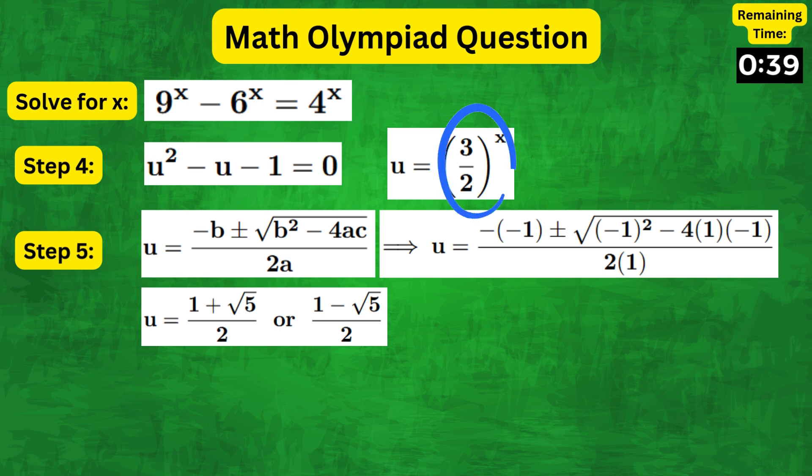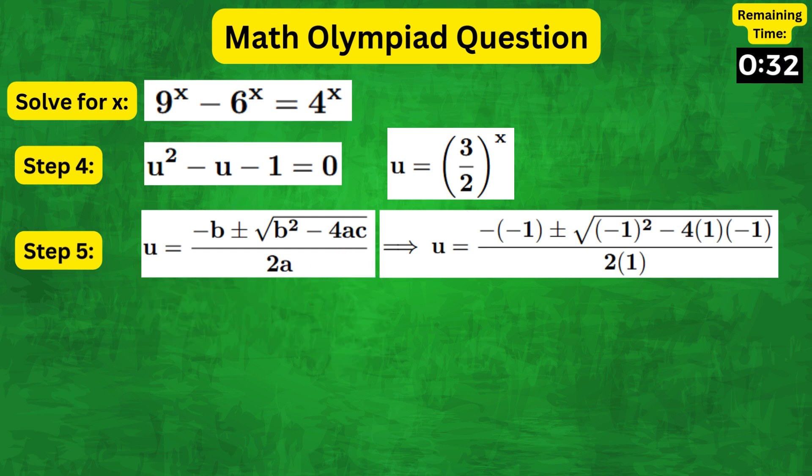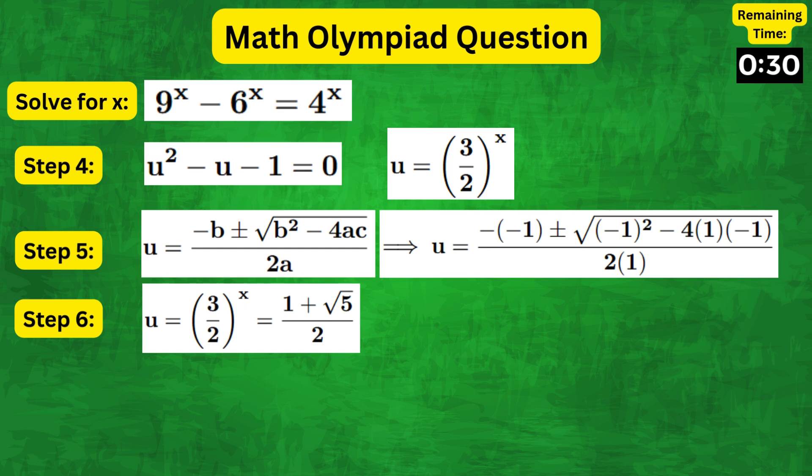Now remember that u equals 3 over 2 to the power of x, which is always positive for any possible value of x. And therefore, it follows that 3 over 2 to the power of x equals 1 plus root 5 over 2.